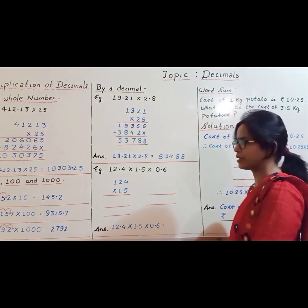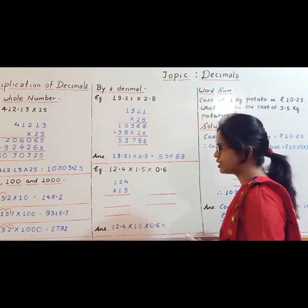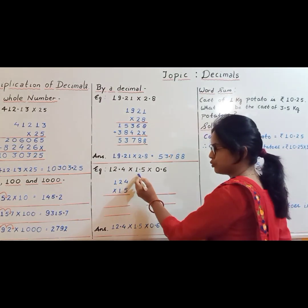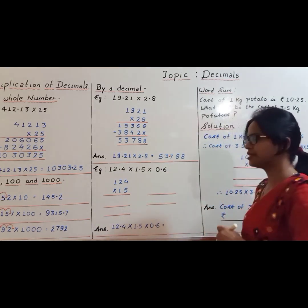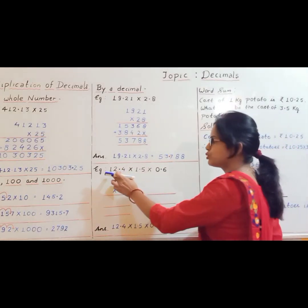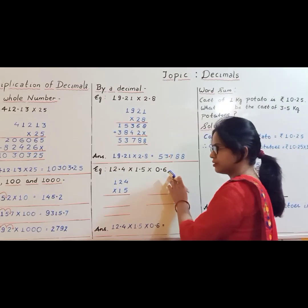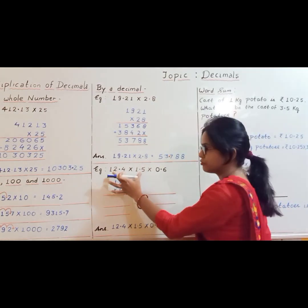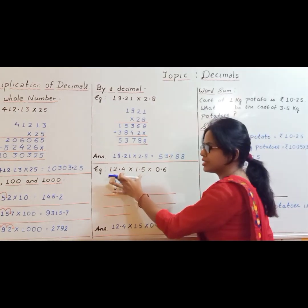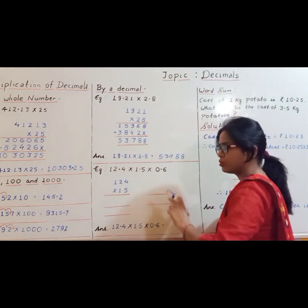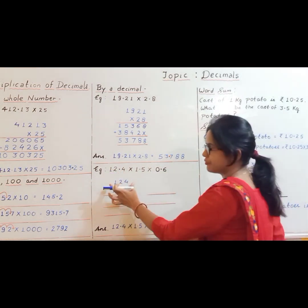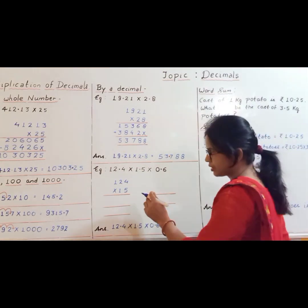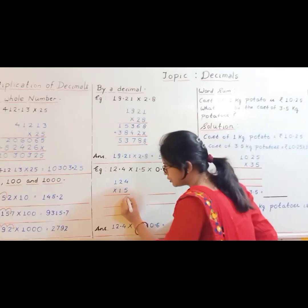Now see another example: the product of 3 decimals. 12.4 into 1.5 into 0.6. To solve this, first of all we have to multiply the first two numbers without the decimal point.